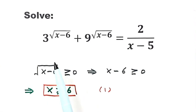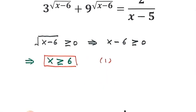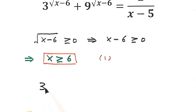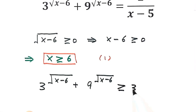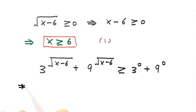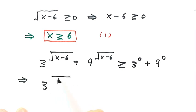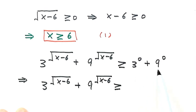Next, we look at the left-hand side of the equation: 3 to the power of square root of (x minus 6), plus 9 to the power of square root of (x minus 6). Because the minimum value of the square root is 0, we substitute 0 in both places. So the left-hand side is bigger than or equal to 3 to the power of 0, plus 9 to the power of 0, which simplifies to 2.